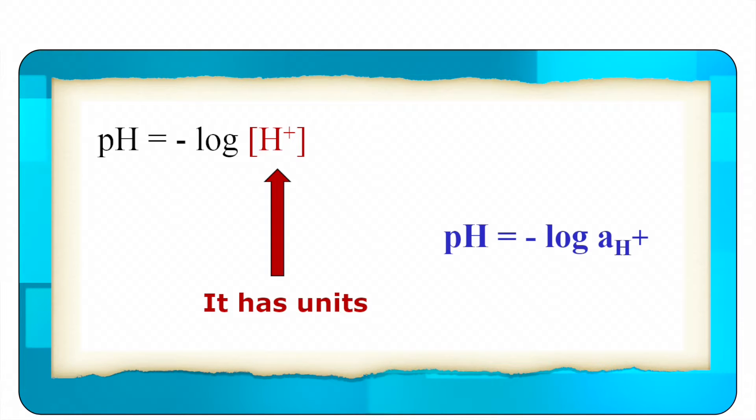Therefore, dimensionally, this definition is not correct. And this is a common misconception as we will show in our discourse that we need to replace hydrogen ion concentration with activity of hydrogen ion. And activity of hydrogen ion is just a number.